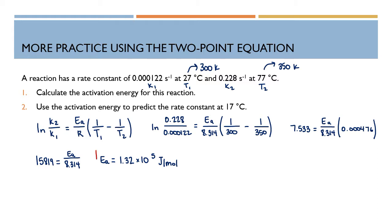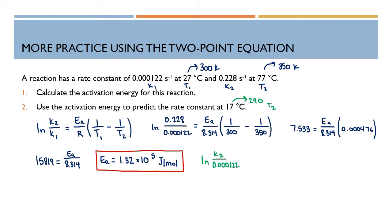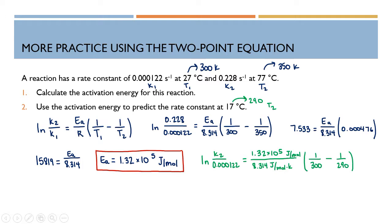The last thing I want to do is use this activation energy to predict the rate constant at 17 degrees Celsius. I convert 17 degrees Celsius to 290 Kelvins — that's my new T2. I'll find the K2 associated with that. The natural log of K2 over 0.000122 — still using T1 and K1 — with the activation energy of 1.32 times 10 to the 5th over 8.314 joules per mole K, and T1 is 300 K, T2 is 290 K.